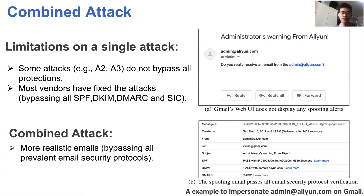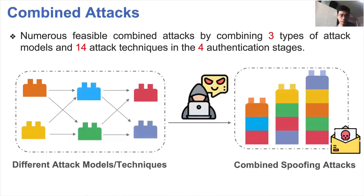The figure shows an example of a successful email sender spoofing attack where all three email security protocols give pass verification results to the spoofing email. The receiver's MUA displays no security alerts, making it challenging to identify whether the email is spoofed — even for people with a senior technical background. By combining three attack models and 14 attack techniques across four authentication stages, we can employ different attack techniques to carry out effective combined attacks.